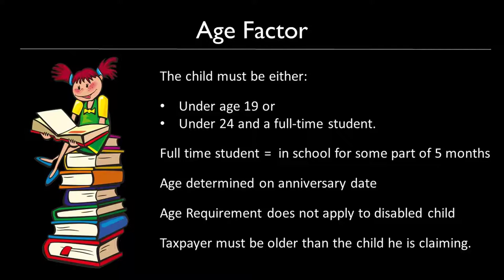The child must be either under age 19 or under 24 years old and a full-time student. A full-time student is defined as being full-time in school for some part of five months during the year. It's important to note that graduation timing matters — if graduation happens in April and the child is younger than 24, you do not get to claim that child in that year as a dependent. Had that graduation happened in May, it would be a completely different story.